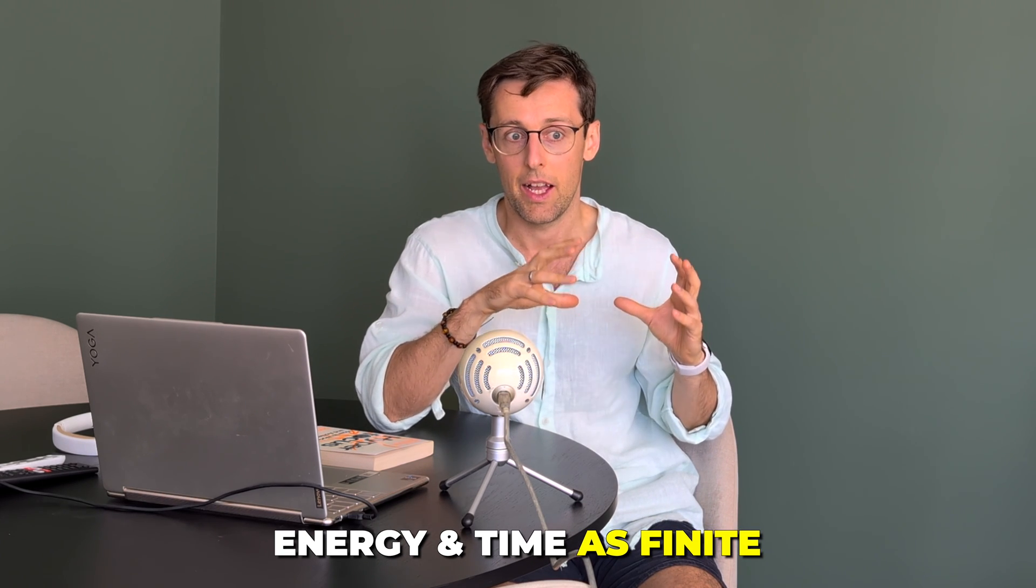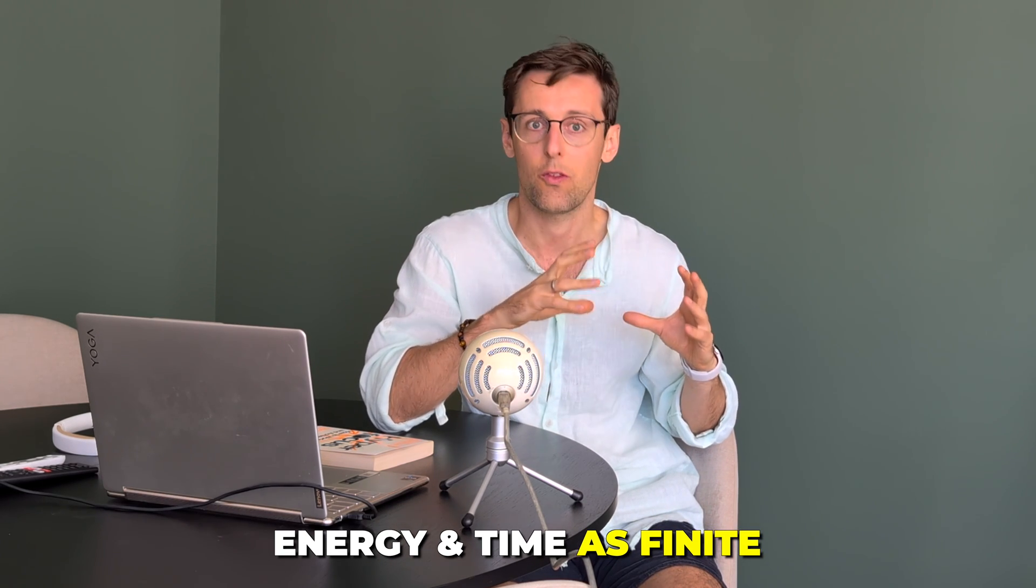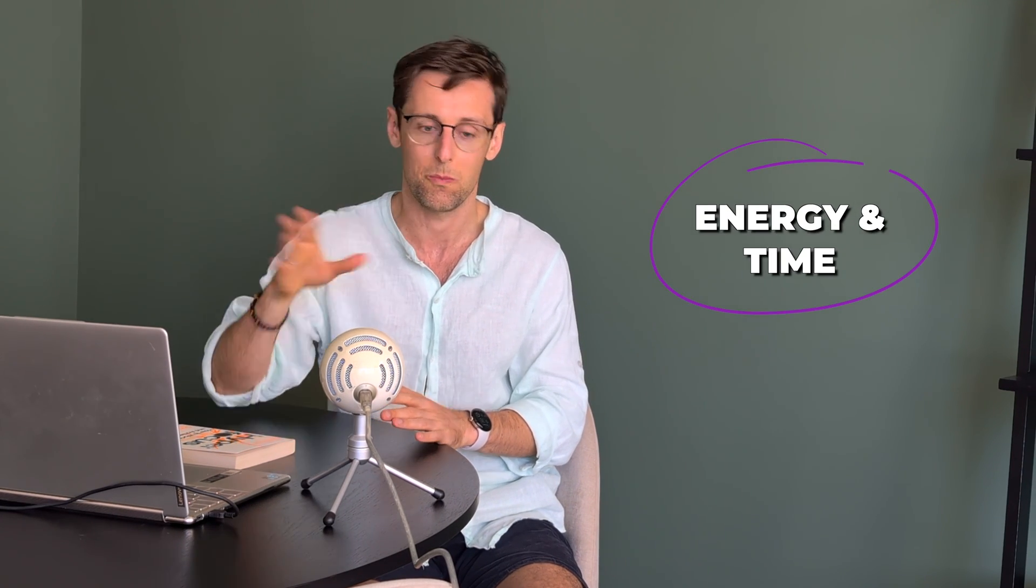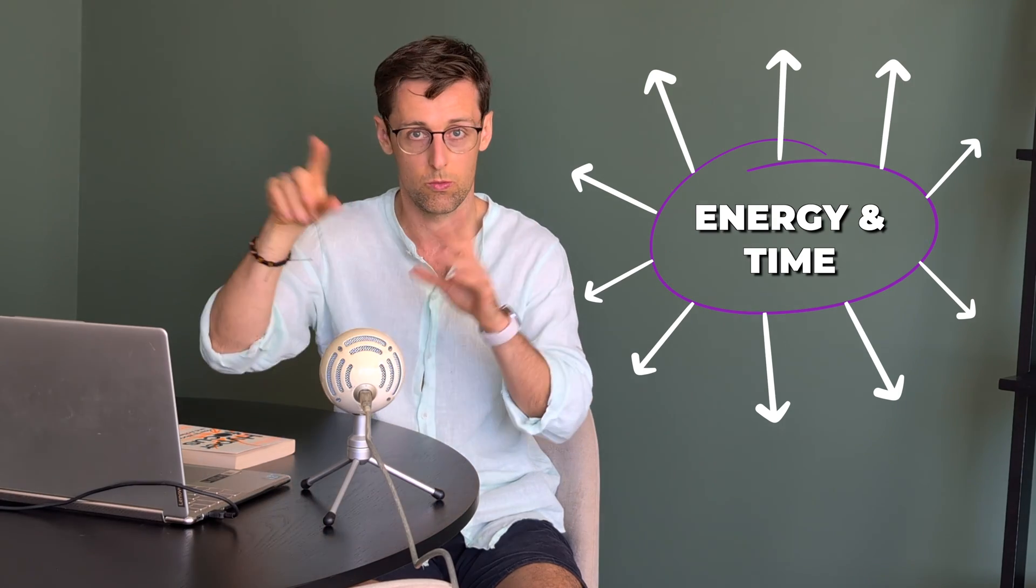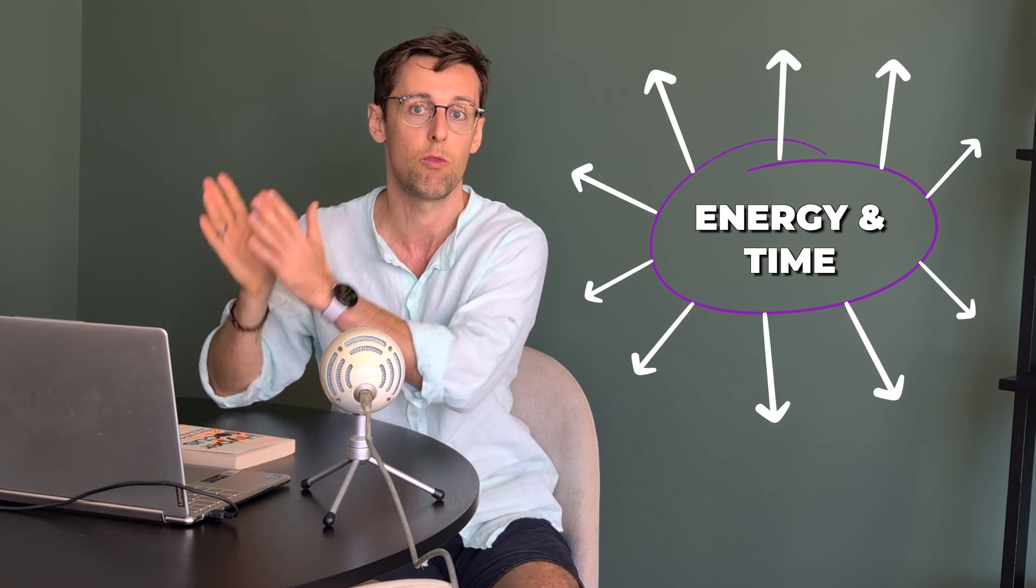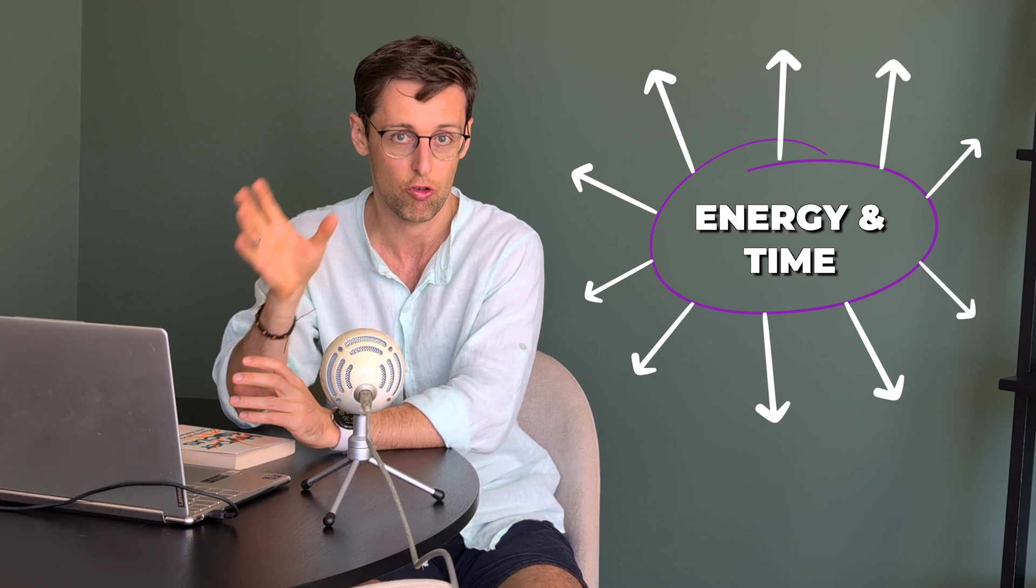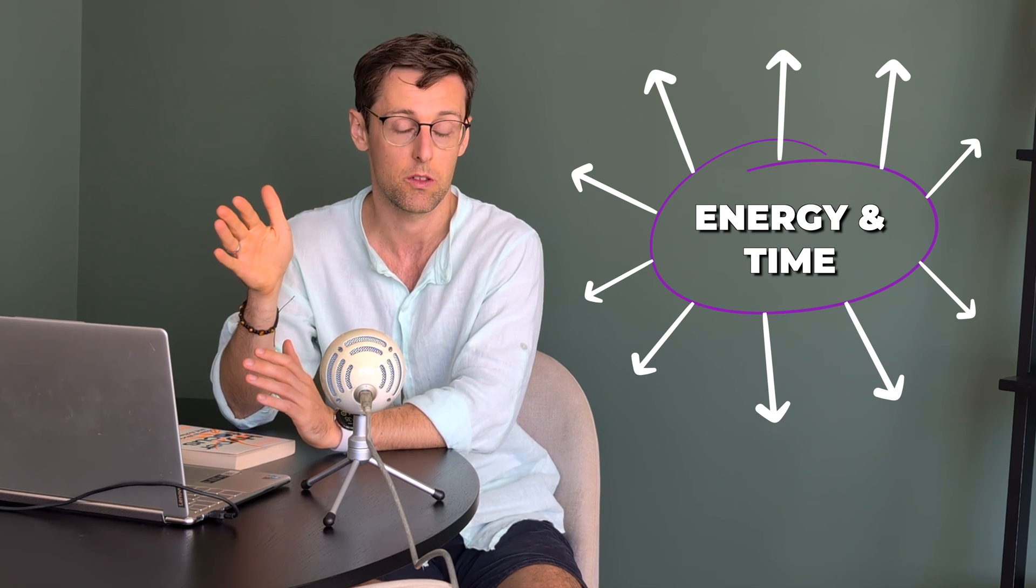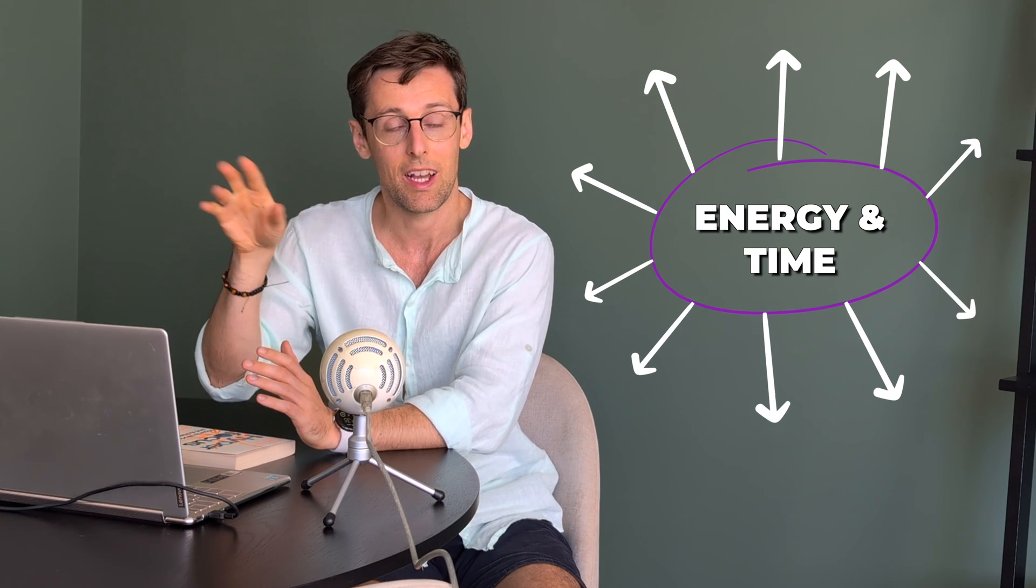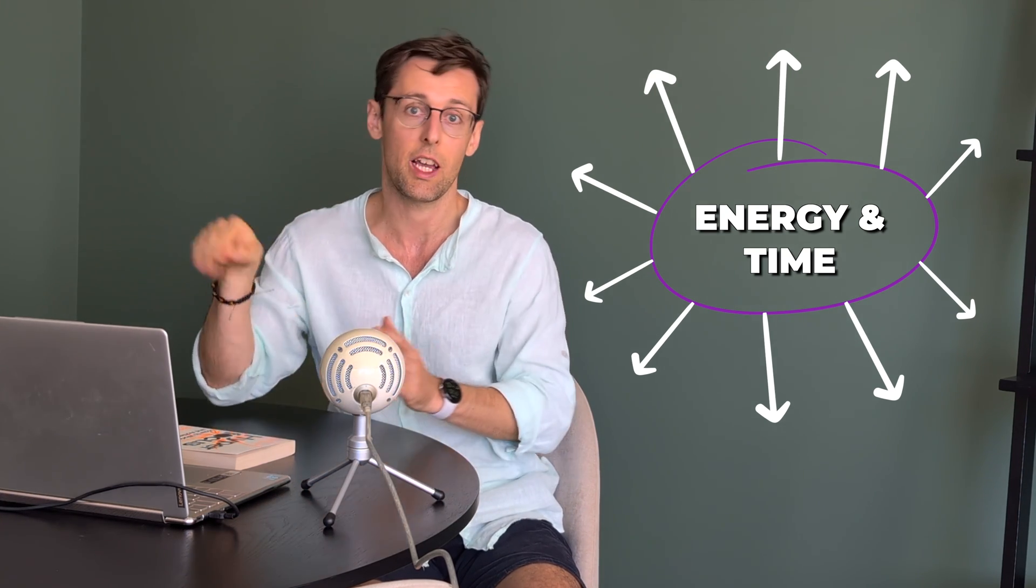So if you think about your energy and your time as finite, and our energy as human beings is finite, and our time on this planet is finite as well. So if you draw that out as a circle, and from that circle, if you draw out arrows into different directions, each arrow representing one task that you're trying to do and focus on for extended periods of time, then the more tasks you have, the shorter the arrows will be.